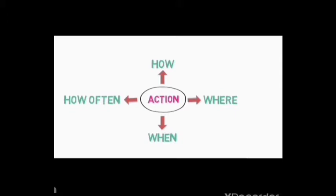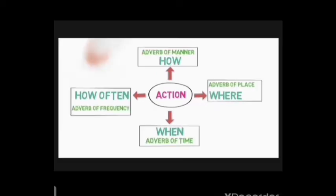Now let's look into each of these three modifications with some examples to make things more clear. How does an adverb modify a verb, or we can say an action performed by the subject? There are four ways in which adverbs modify or describe an action: firstly, how an action is performed; secondly, where the action is performed; thirdly, when the action is performed; and fourthly, how often or frequently the action is performed.